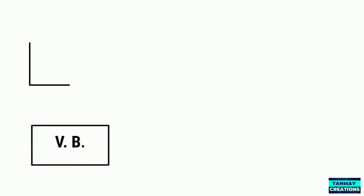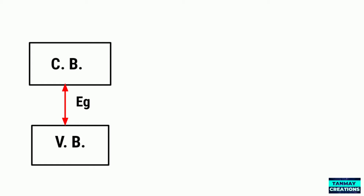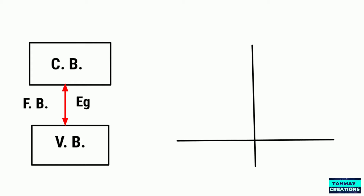A semiconductor material is represented by a valence band and a conduction band. There are regions of energy in between these two bands that are not allowed, and this region is known as the forbidden band gap, or simply the energy gap, represented by EG.